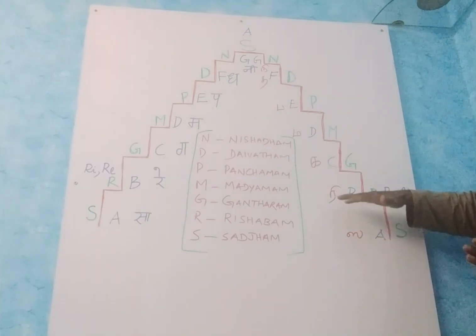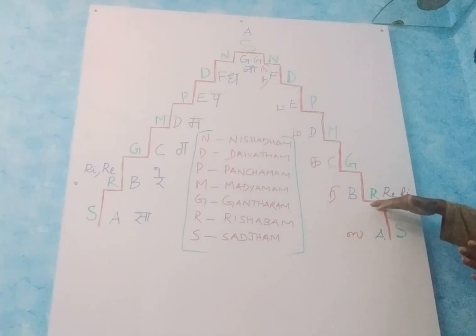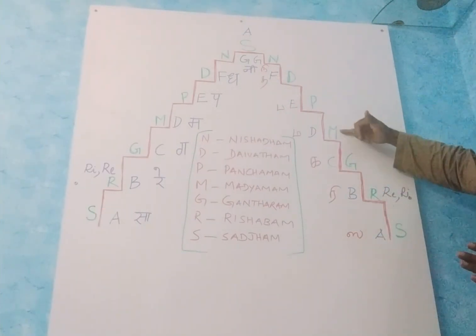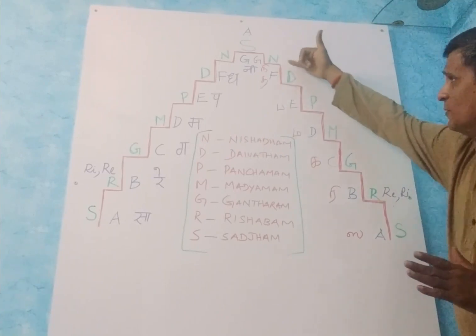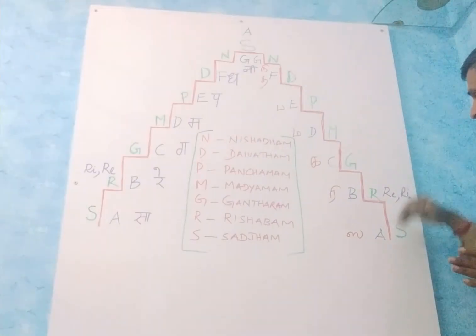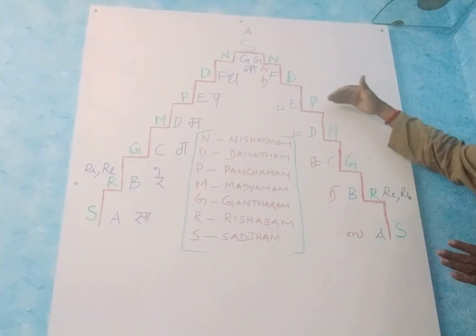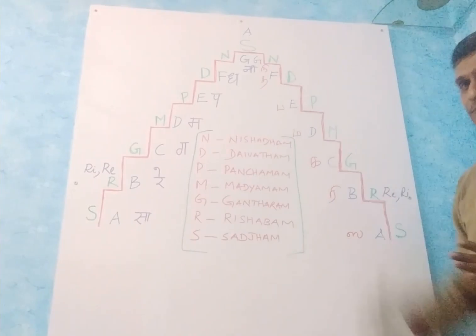Sa corresponds to A, Re corresponds to B, Ga to C, Ma to D, Pa to E, Da to F, Ni to G. Like that, one by one it maps out across the two systems.